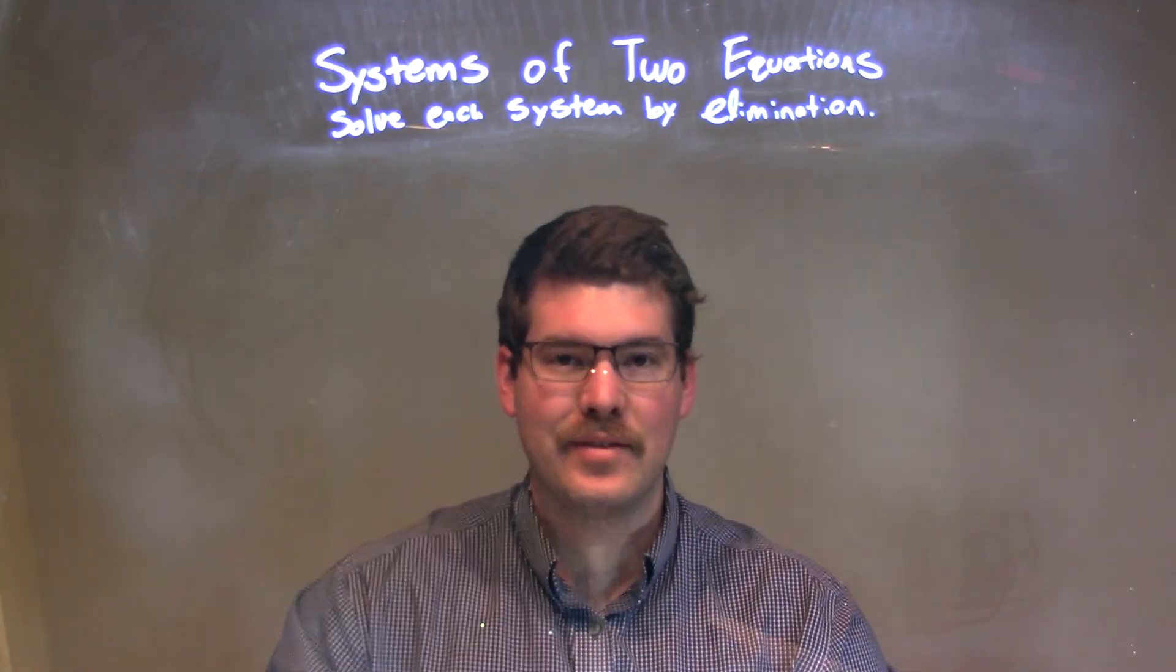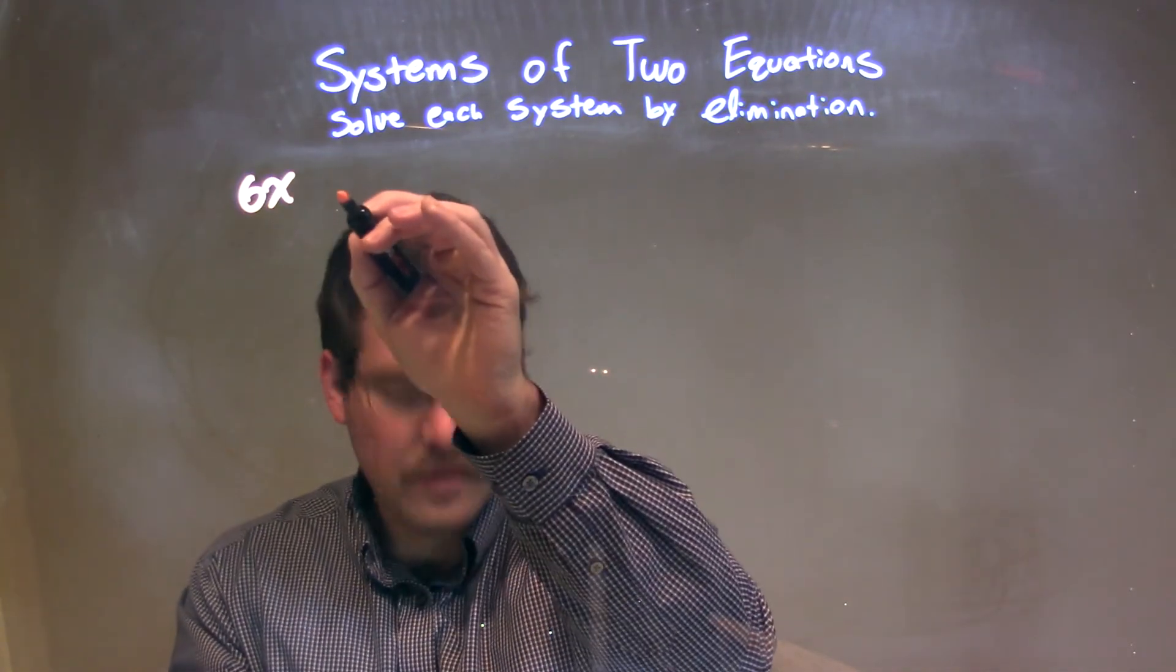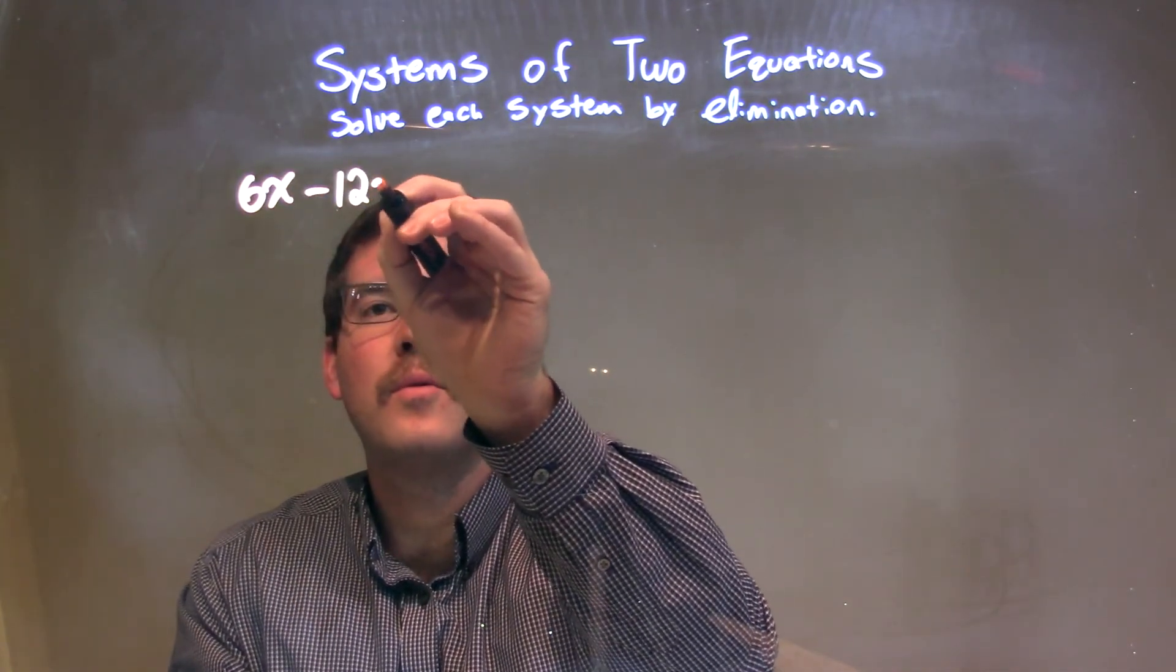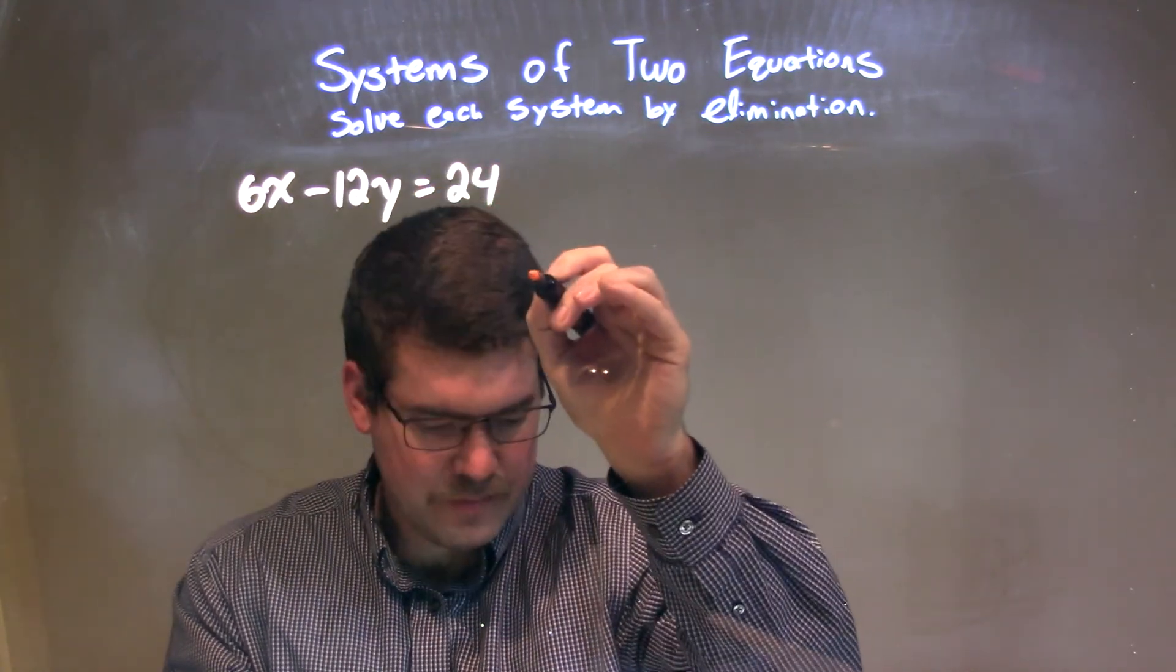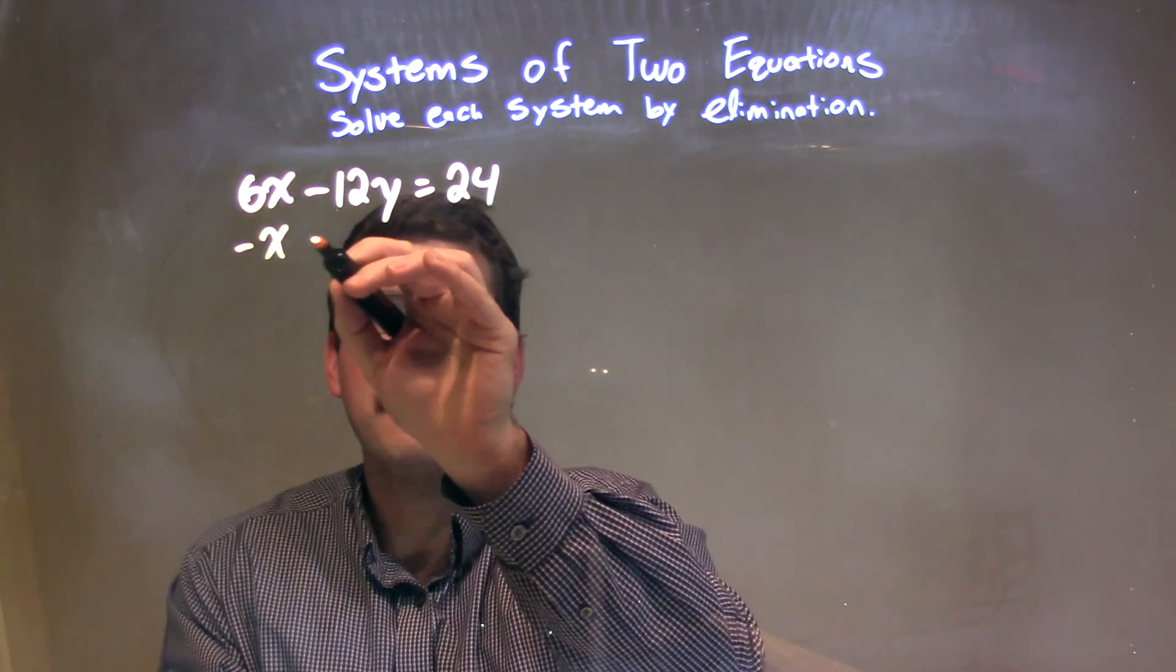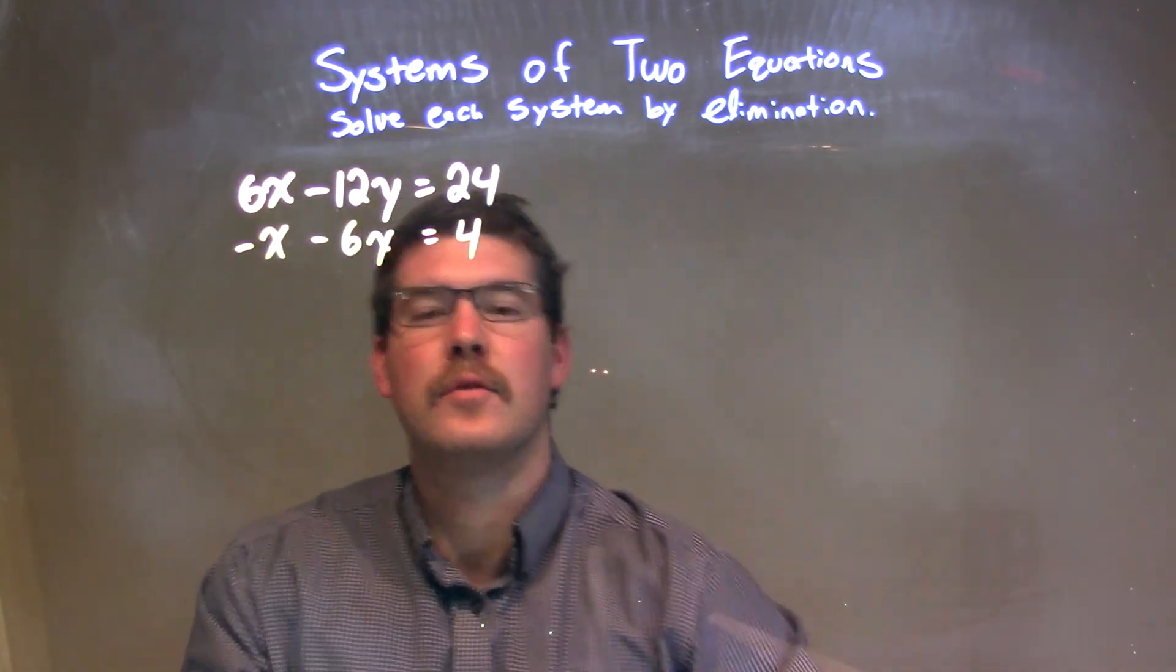I was given this system here: 6x minus 12y equals 24, and negative x minus 6y equals positive 4.